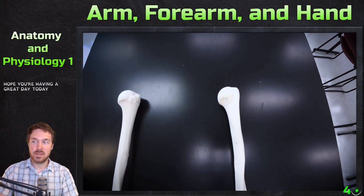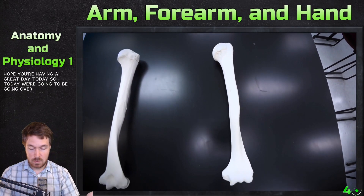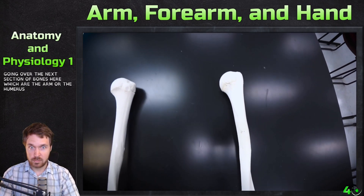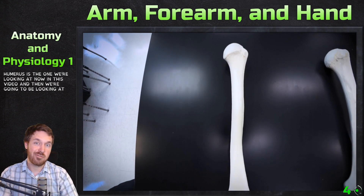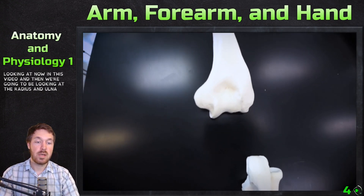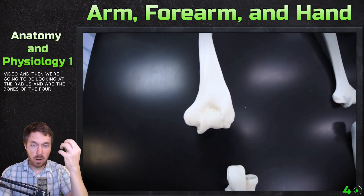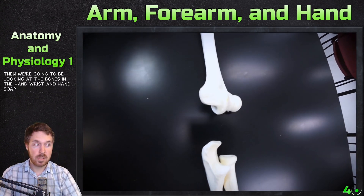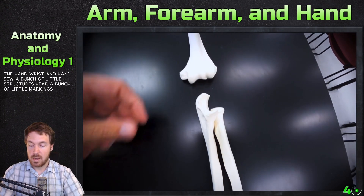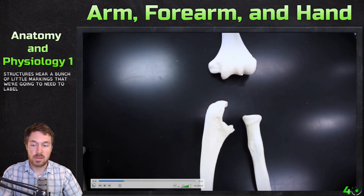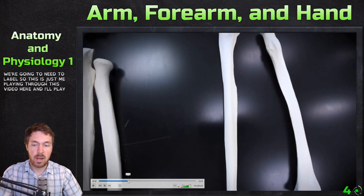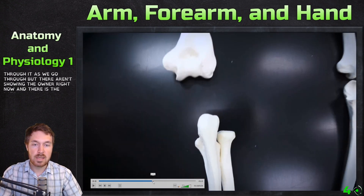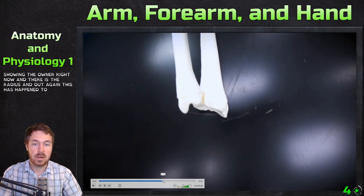Hello everyone, hope you're having a great day. Today we're going over the next section of bones: the arm, or humerus, then the radius and ulna which are the bones of the forearm, and then the bones of the wrist and hand. There are a bunch of little structures and markings we'll need to label. I'm showing the ulna and radius now — this is appendicular, so we have to focus on what's left and right.